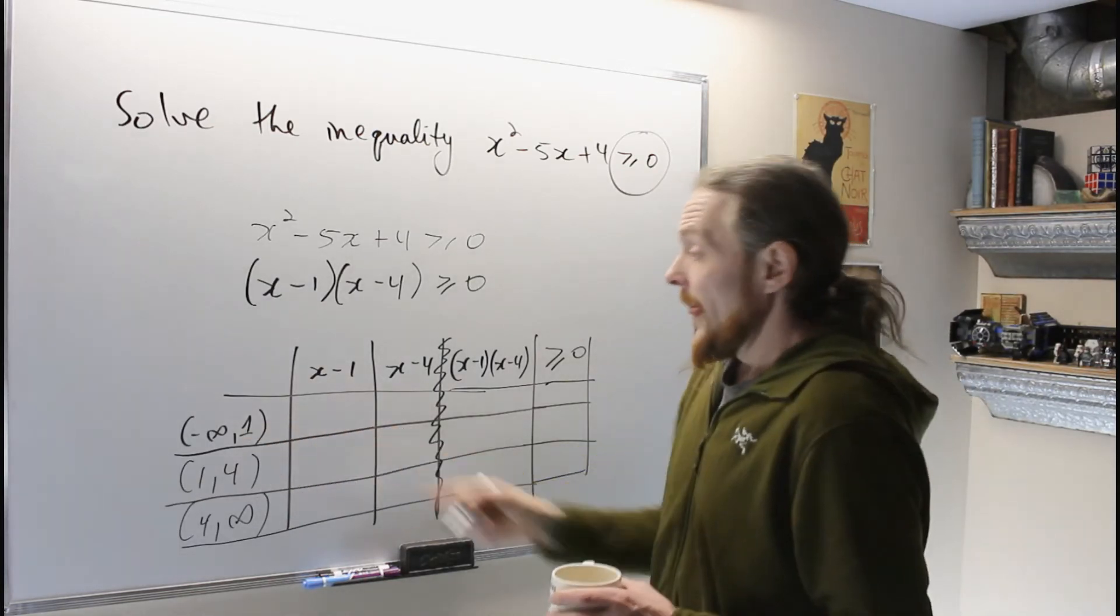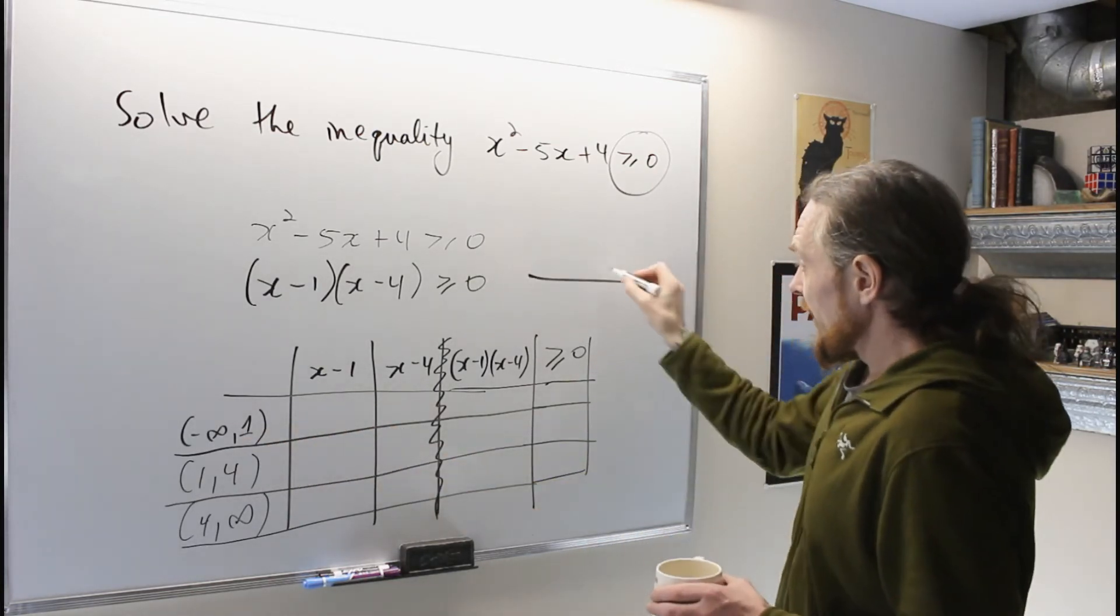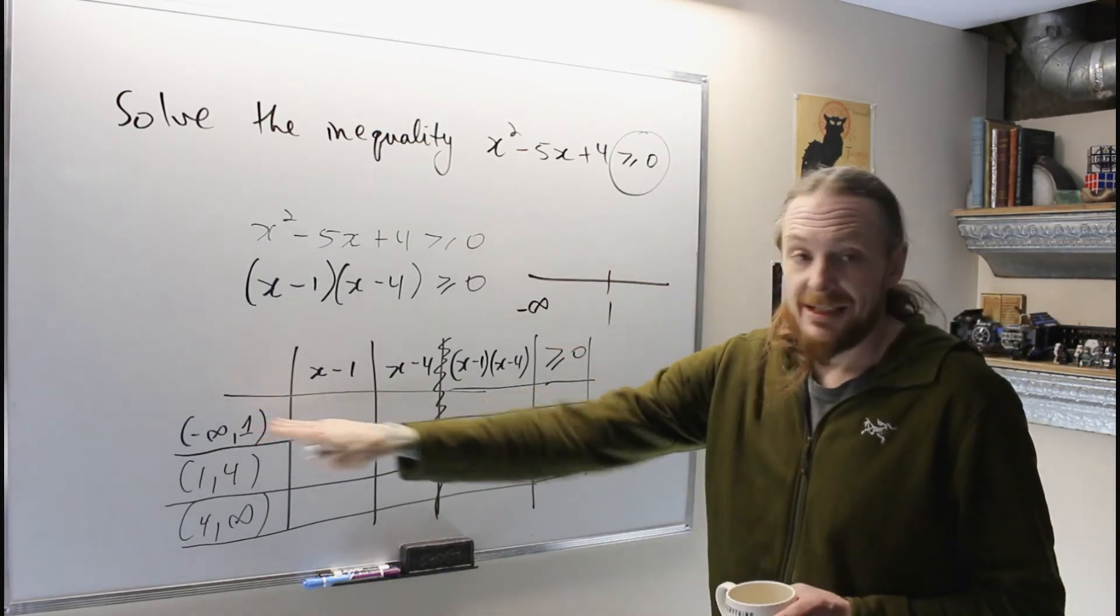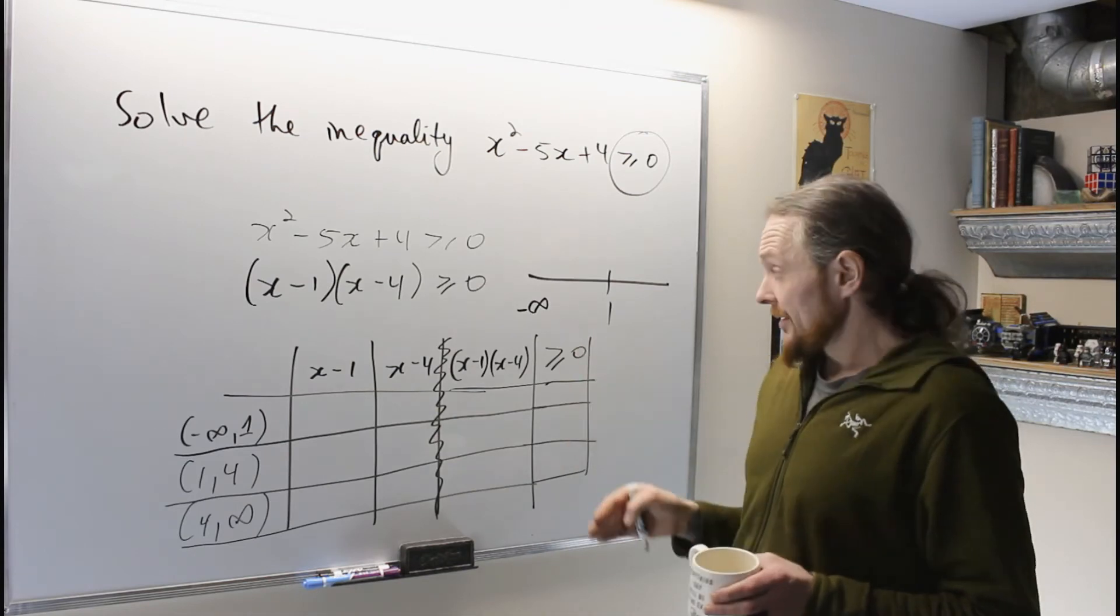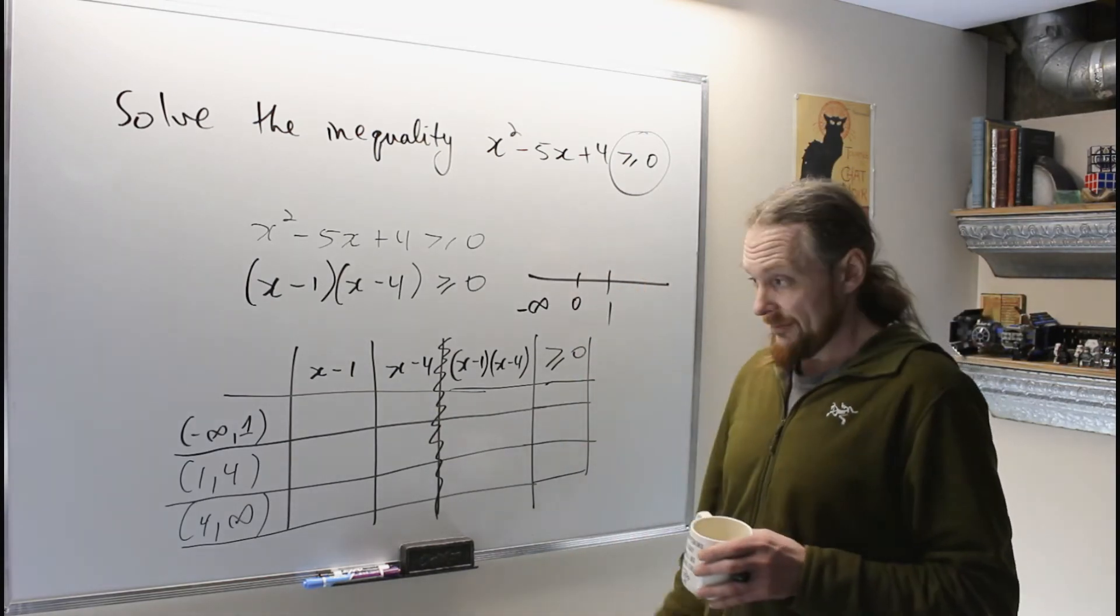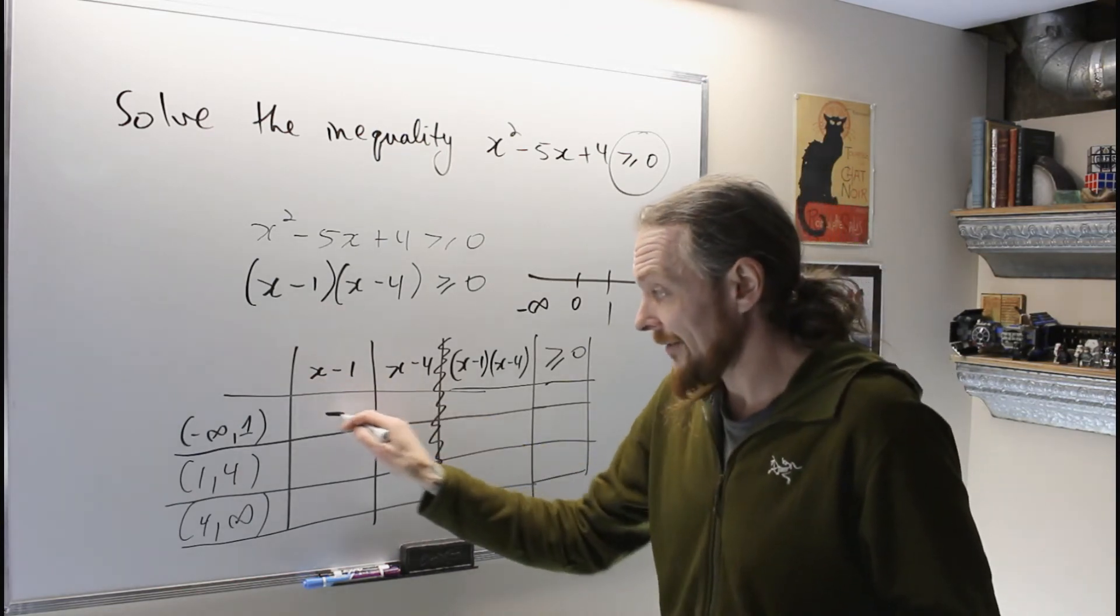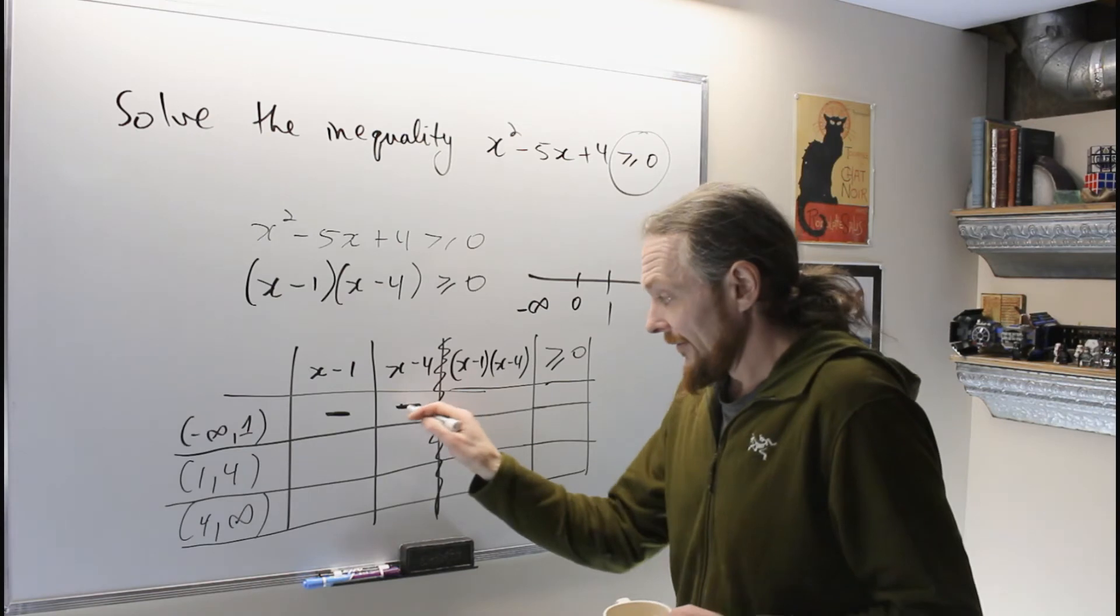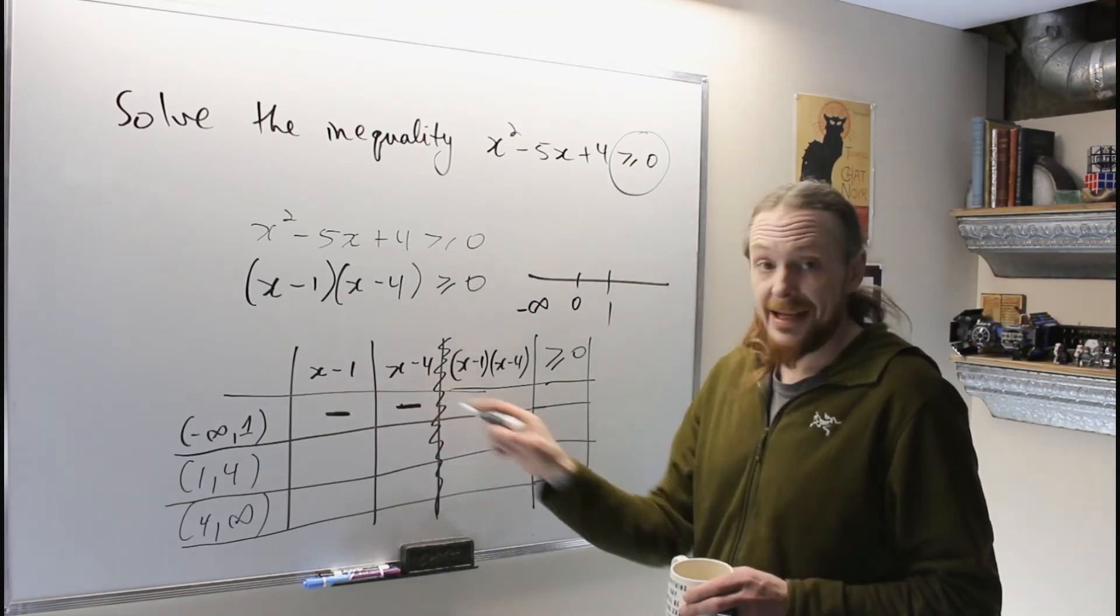So in here, in this first interval from negative infinity to 1, all I have to do is pick any representative in there and everybody is the same sign. So I'm going to pick 0 in that interval. So 0 minus 1 is negative. All you need is the sign. 0 minus 4 is negative, but negative times negative is positive.